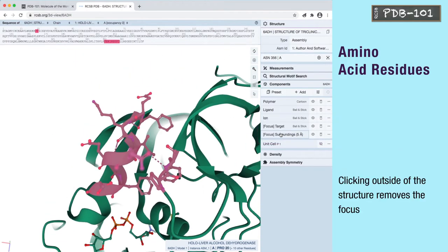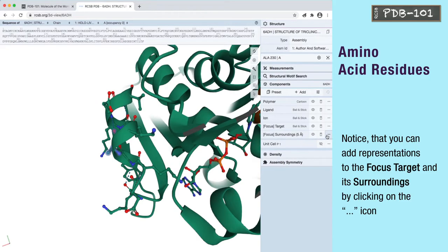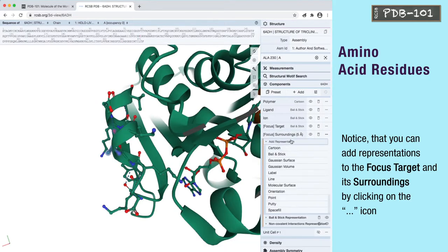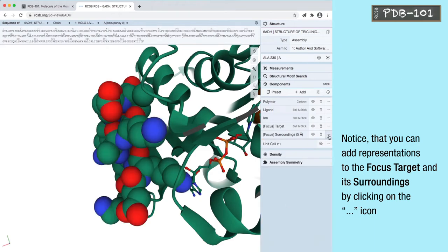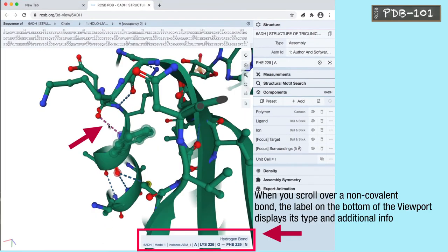Clicking outside of the structure removes the focus. Notice that you can add representations to the focus target and its surroundings by clicking the 3 dots icon. When you scroll over a non-covalent bond, the label on the bottom of the viewport displays its type and additional info.